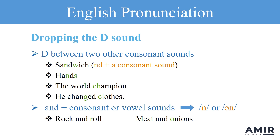One common pattern where this happens is when we have N, D, and another consonant sound, like in the word sandwich. Do you notice that you don't hear a strong D sound? Sandwich. Here, the letter D is between N and W, so it can be dropped.